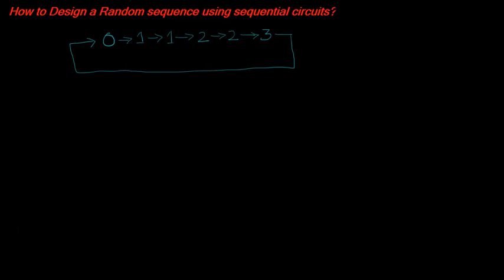Hello guys, today we will be seeing how a random sequence can be generated using sequential circuits. This random sequence generator is a bit special because it has repetitive states: 0, 1, and from 1 it should jump to 1 again, and from that 1 to 2, and this 2 value to another 2 value. This is a special kind of problem that we will be seeing in today's session.